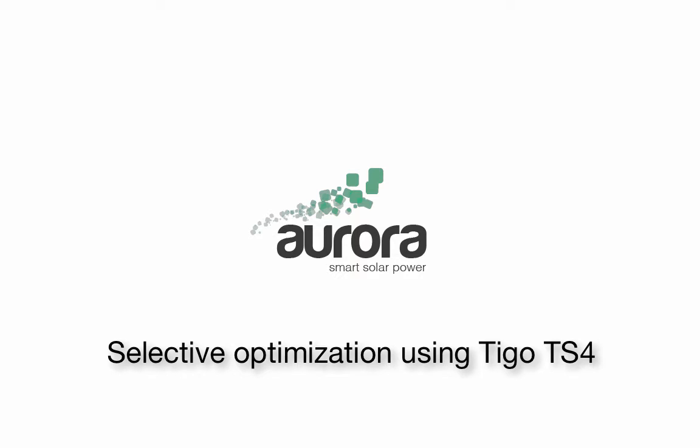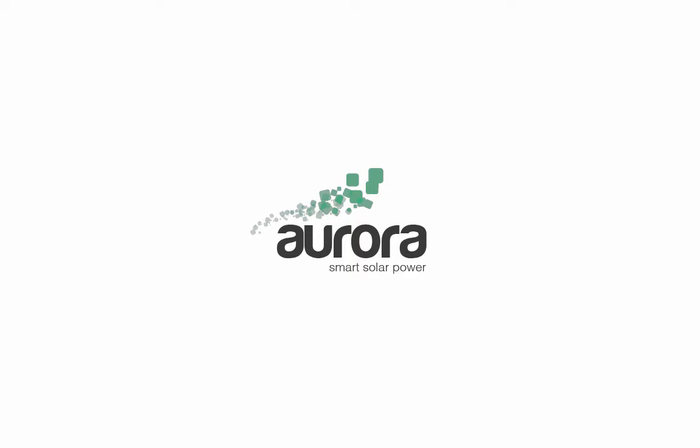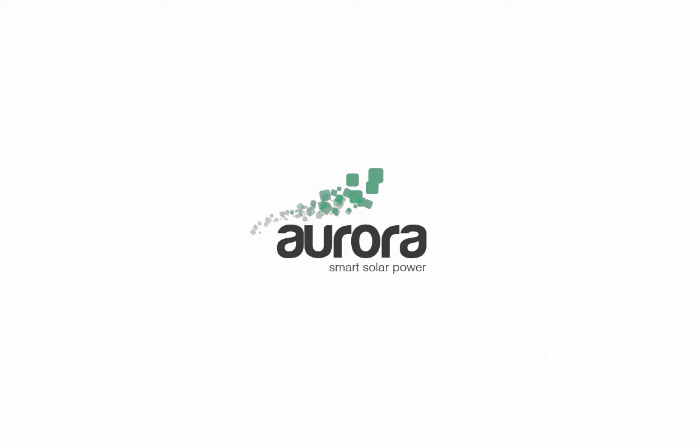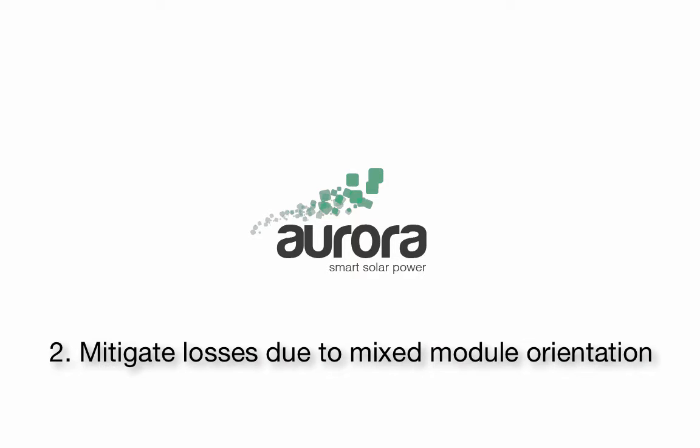Hi there. In this video, we are going to be demonstrating how to use Aurora to model a selectively optimized solar installation. We will be examining the Tygo TS-4's ability to mitigate performance losses due to shade, and we will also examine the performance boost gained by optimizing modules placed in mixed orientations.